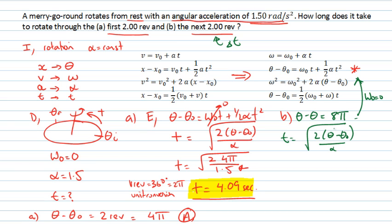So once again, I'll use this same expression here. Now I'm going to have the square root of 2 times 8π divided by 1.5. And that time is 5.79 seconds. Now that's not the time for the next two revolutions. Once again, that's the time to go around four times.